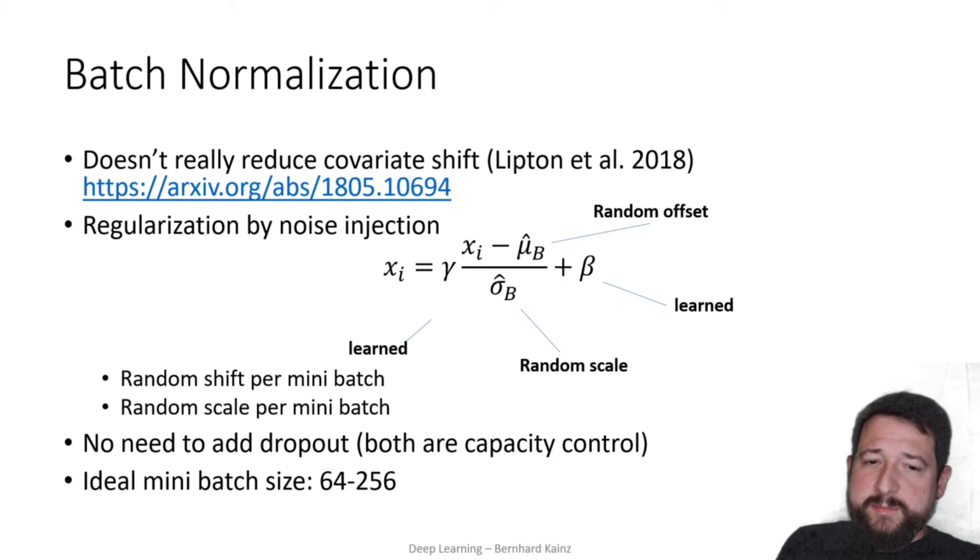If you pick a mini batch that's too large, then you're not injecting enough noise and you're not regularizing enough. If you're picking one that's too small, then basically the noise becomes way too high. And then you're not converging very well, actually. This doesn't matter so much for single GPU training implementation. But as soon as you go to multi GPU training, it starts to matter quite immensely.